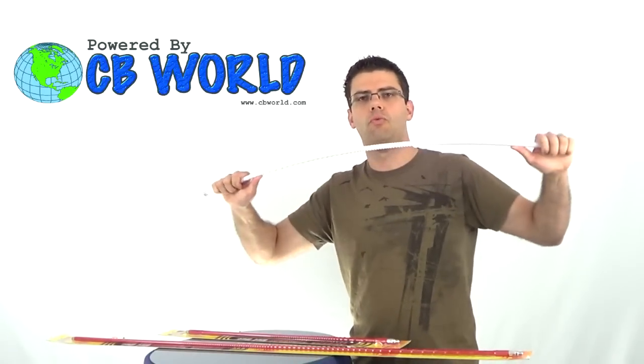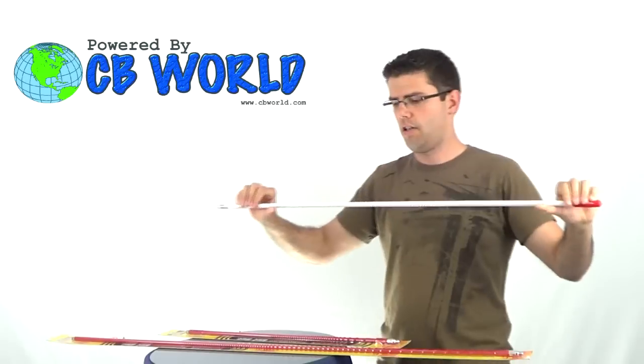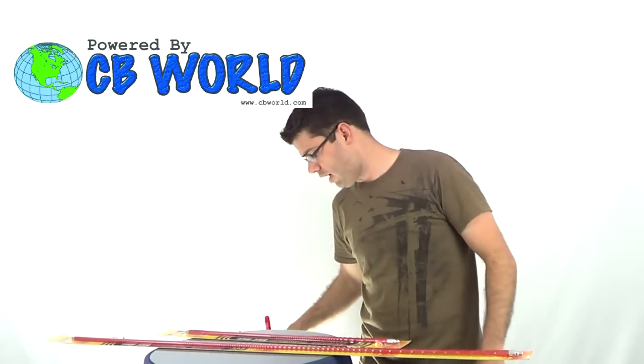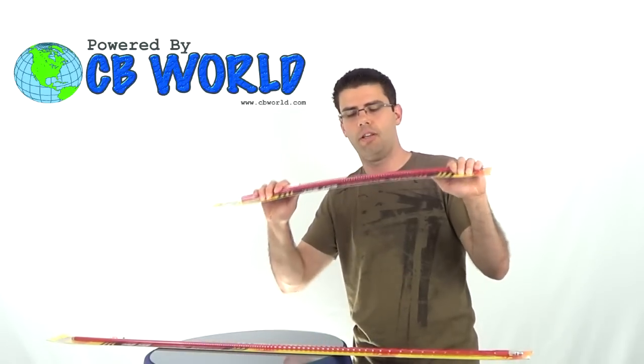The fiberglass antennas aren't real flexible to begin with. This here is a 3 foot and not very flexible as you can see. And the shorter you get, the less flexible they are. The 2 foot barely bends at all.